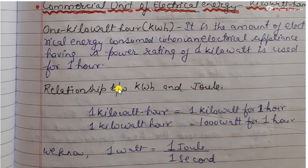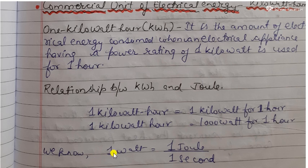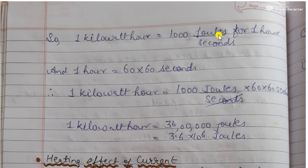Now we will study the relationship between one kilowatt-hour and joules. We know 1 kilowatt equals 1000 watts, so 1 kilowatt-hour means 1000 watts for 1 hour. We also know that 1 watt equals 1 joule per second, since power is the rate of work done divided by time. So 1 watt equals 1 joule per second. Therefore, 1 kilowatt-hour equals 1000 joules per second for 1 hour, and 1 hour contains 3600 seconds (60 × 60).